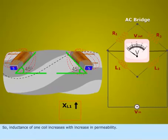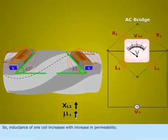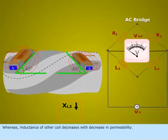So, inductance of one coil increases with increase in permeability, whereas inductance of other coil decreases with decrease in permeability.